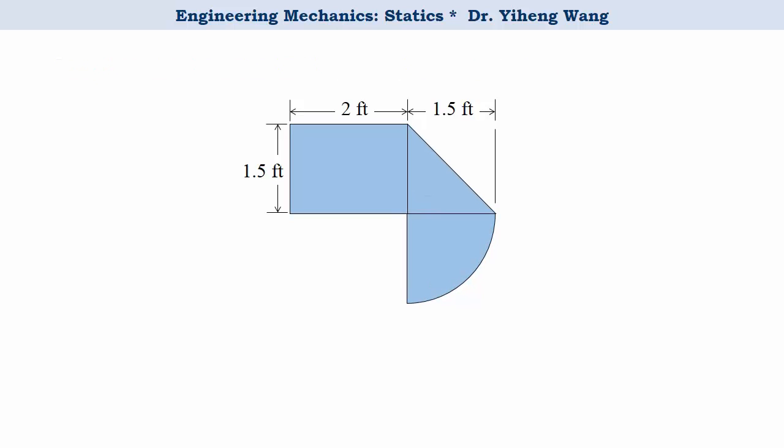Therefore, we first put the composite area in an x-y coordinate system, decide that these three are our simpler component areas, and use reference book or internet to locate the coordinates for their respective centroids. Please remember, they must be with respect to the same coordinate system.